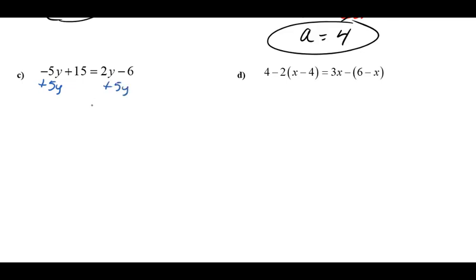What that would mean is that my variable term would be isolated on the right side as a 7y. So to do that, then I would also need to get rid of this negative 6 term on the right side. So I'll attach a positive 6 to both sides. And that would give me a 21.